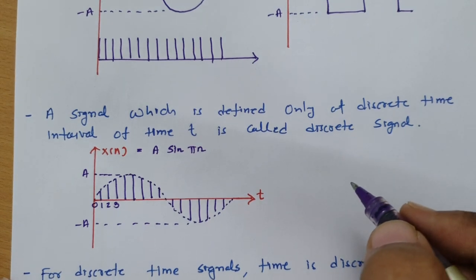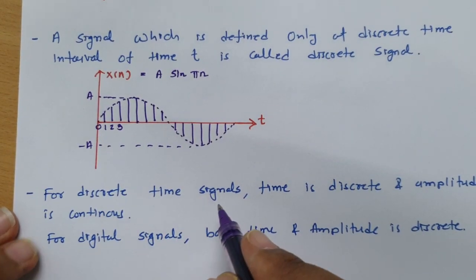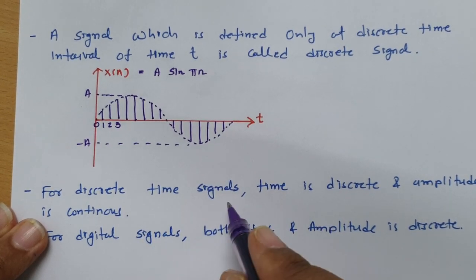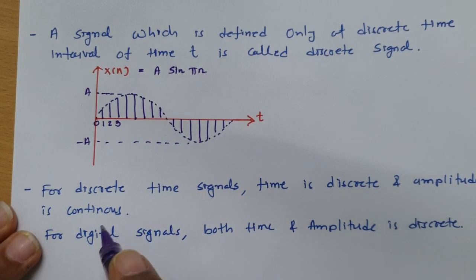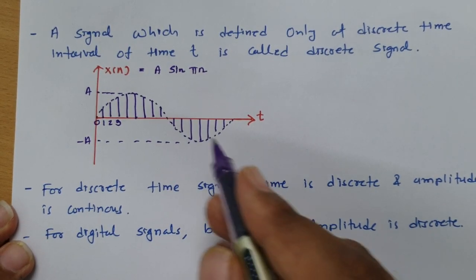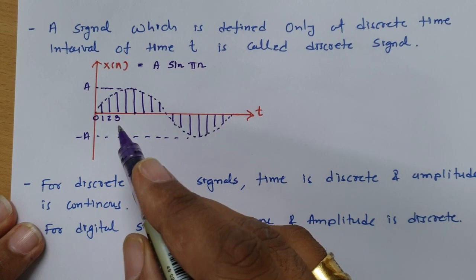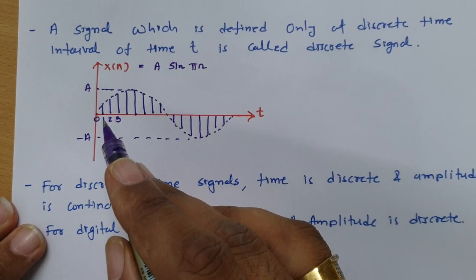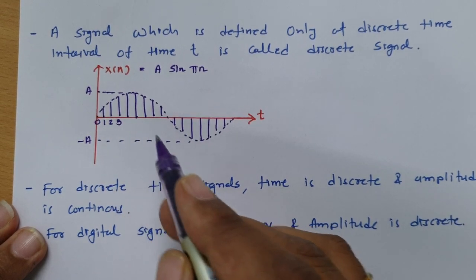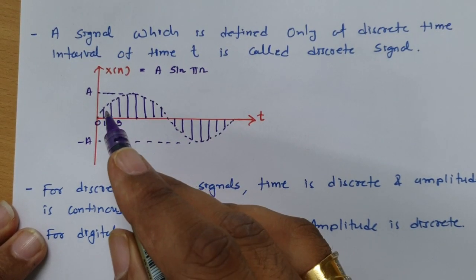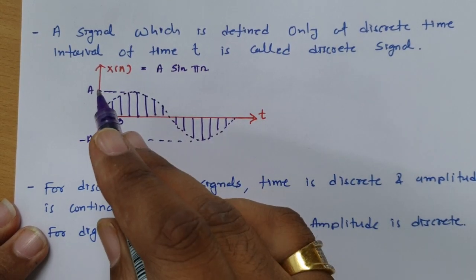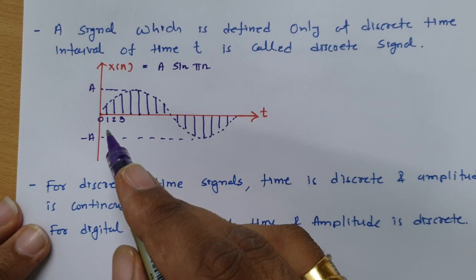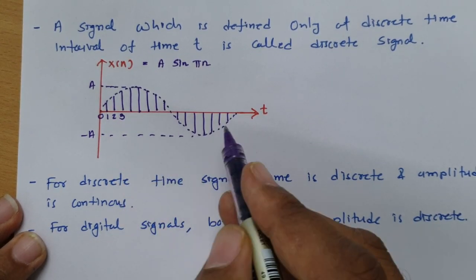Now let us discuss a few basics about discrete time signals. In a discrete time signal, time is discrete but amplitude is continuous. We have fixed samples at particular positions 0, 1, 2, 3, but the amplitude can be anything within the range — so the amplitude is continuous while time is discrete.